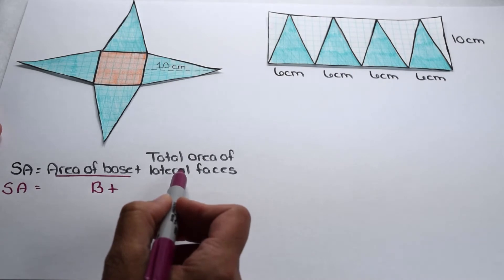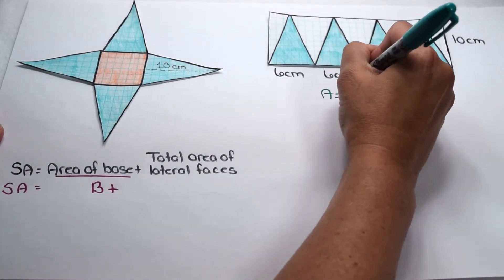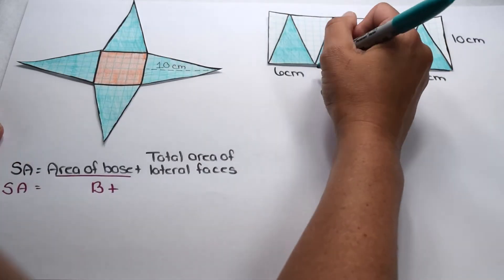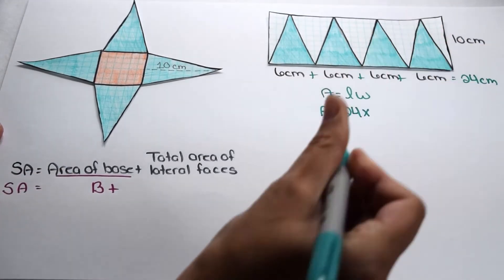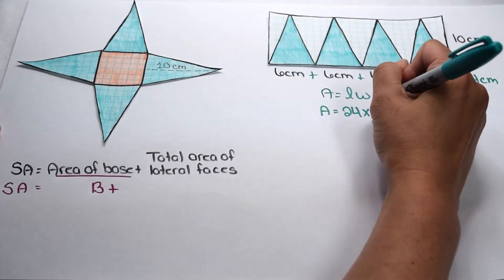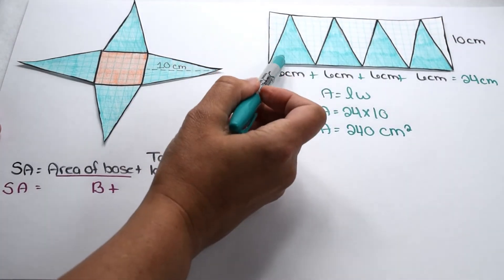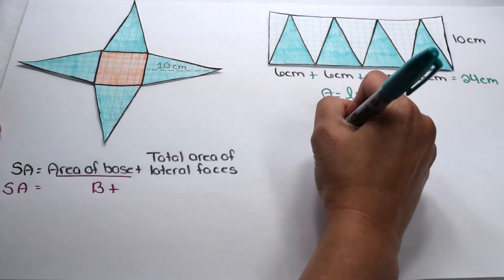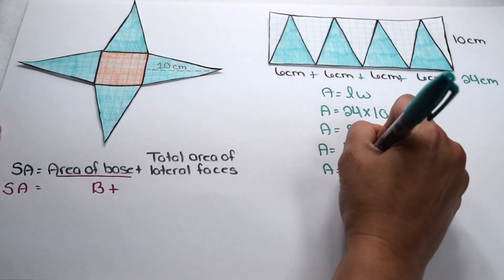Let's look more closely at the total area of our lateral faces. We took the triangular lateral faces, arranged them in a row, and drew a rectangle around them. The area of a rectangle is length times width. Our length came from each of the bases of our triangles — 6, 6, 6, and 6 — so the total length is 24 centimeters. The width comes from the slant height of the triangle, giving us 24 times 10, or 240 square centimeters. But our triangles only take up about half that rectangle, so we need half of 240, which is 120 square centimeters — the same result as before.